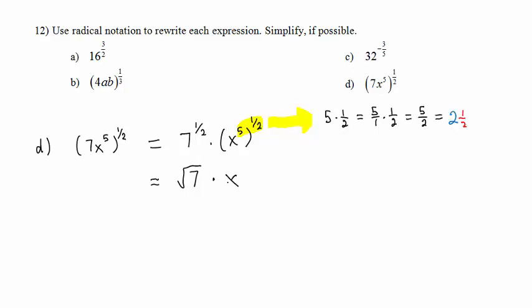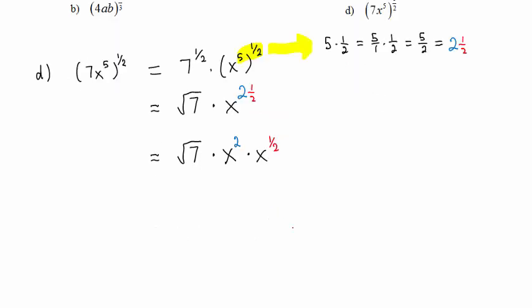So we have x raised to the 2 and 1 half power. Laws of exponents can be used to show that x to the 2 and 1 half power means x to the 2nd power times x to the 1 half power. And just as 7 to the 1 half power is square root of 7, x to the 1 half power is square root of x.